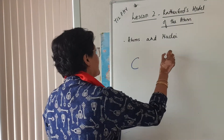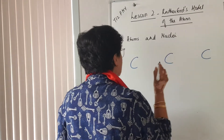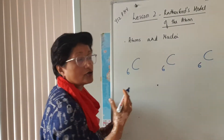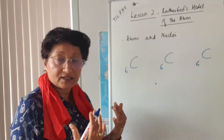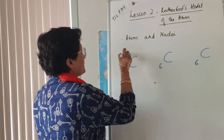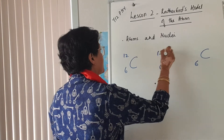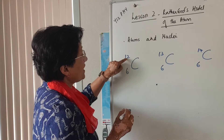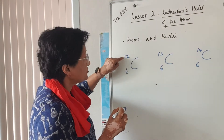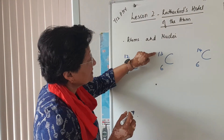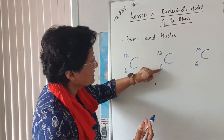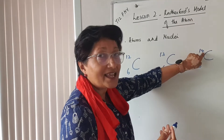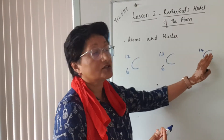For example, let's take carbon, which has six protons in the nucleus — so all isotopes of carbon will have six protons. You have carbon-12, carbon-13, and carbon-14. Carbon-12 has six protons and six neutrons. Carbon-13 has six protons and seven neutrons, because 13 minus 6 is 7. Carbon-14 has six protons and eight neutrons. These are called isotopes of carbon.